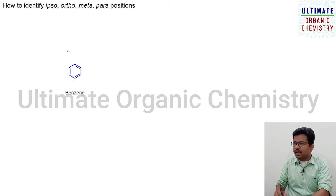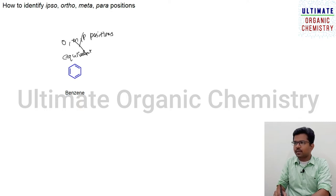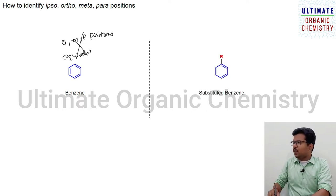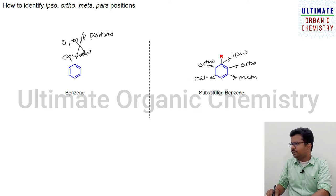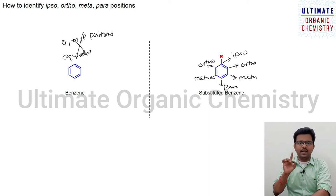In simple benzene, all the carbon atoms are equivalent in nature, so it does not have any ortho-meta-para positions. But if I give another molecule where benzene is substituted, that is called substituted benzene. The first substituted carbon is called ipso, the next positions are called ortho, the carbon atoms next to ortho are called meta, and the fourth carbon atom is called para. Simple benzene does not have ortho-meta-para positions; only substituted benzene will have them.